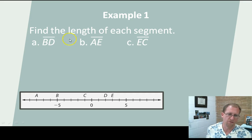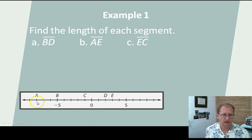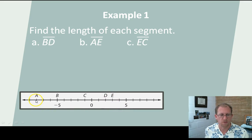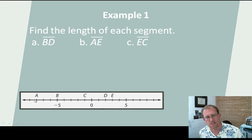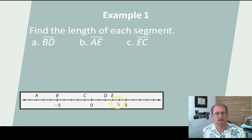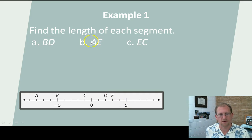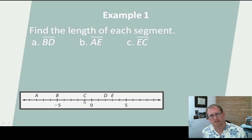Segment AE. How far apart are A and E? E is at 3 and A is at negative 8. Going this way to show it works both directions: negative 8 minus 3 is negative 11, the magnitude of which is 11. So the distance is 11. EC — E is at 3, C is at negative 1. 3 minus negative 1 is 4, so the distance there is 4. Pretty simple stuff.